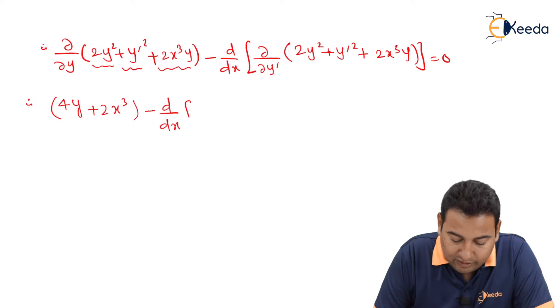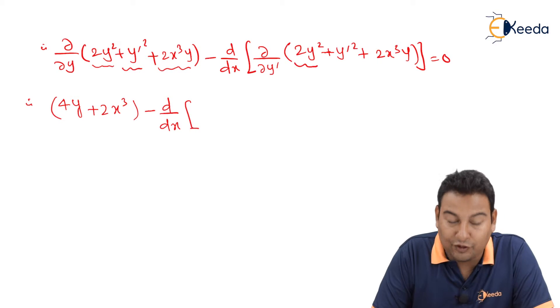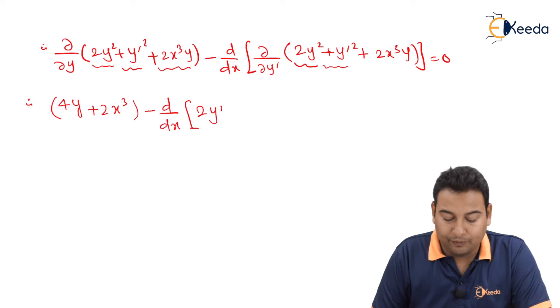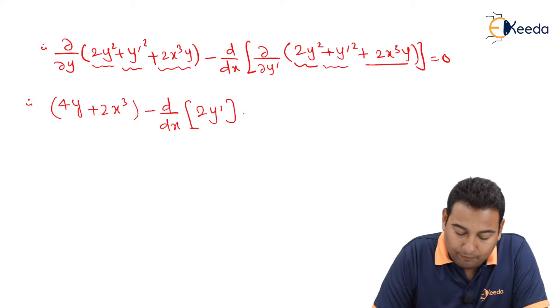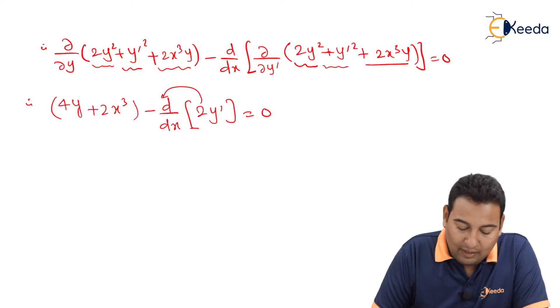Minus d/dx, with respect to y dash this is 0, this is 2y' because y' square derivative is 2y', and this is 0. This 2 will come out.